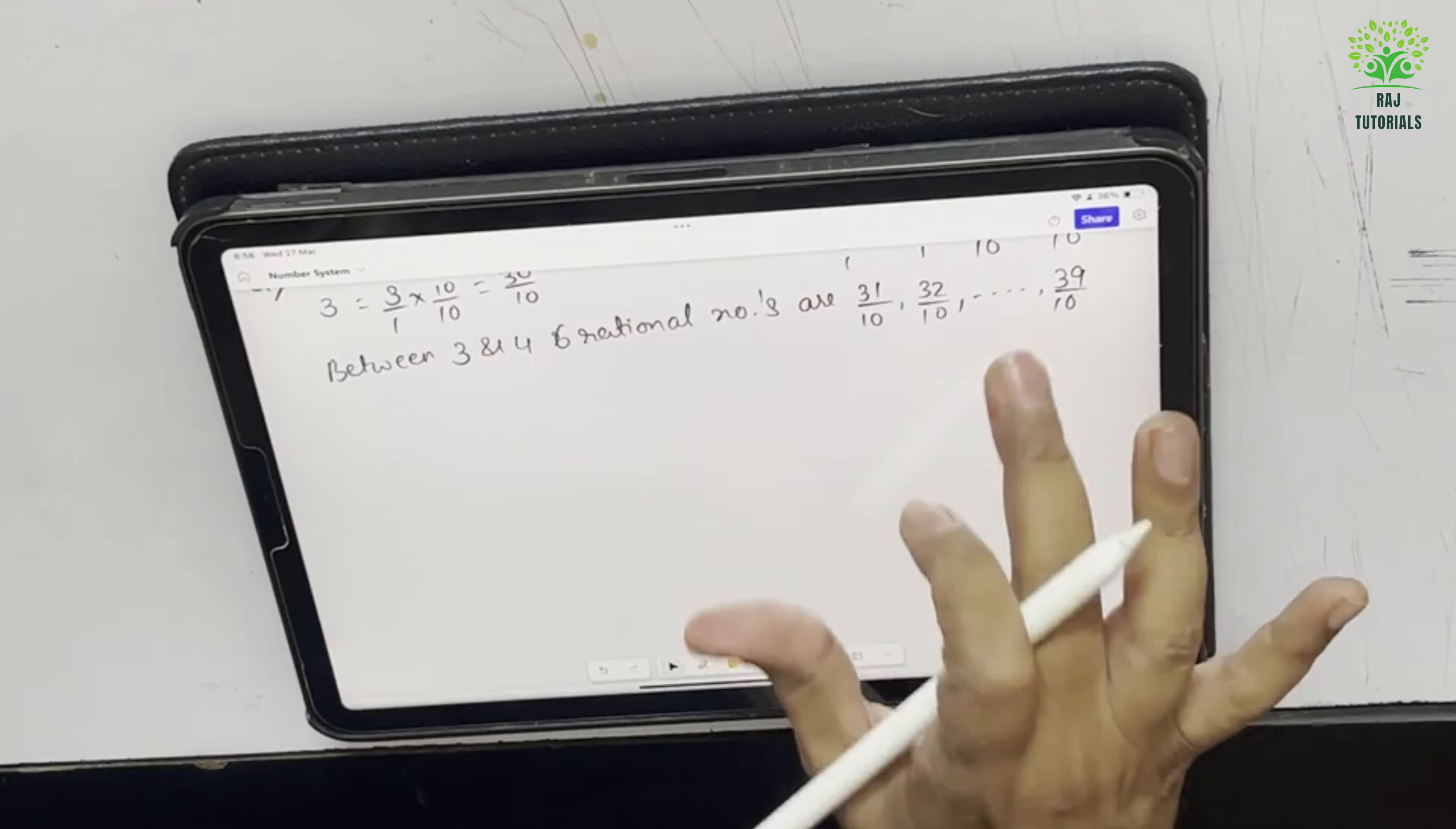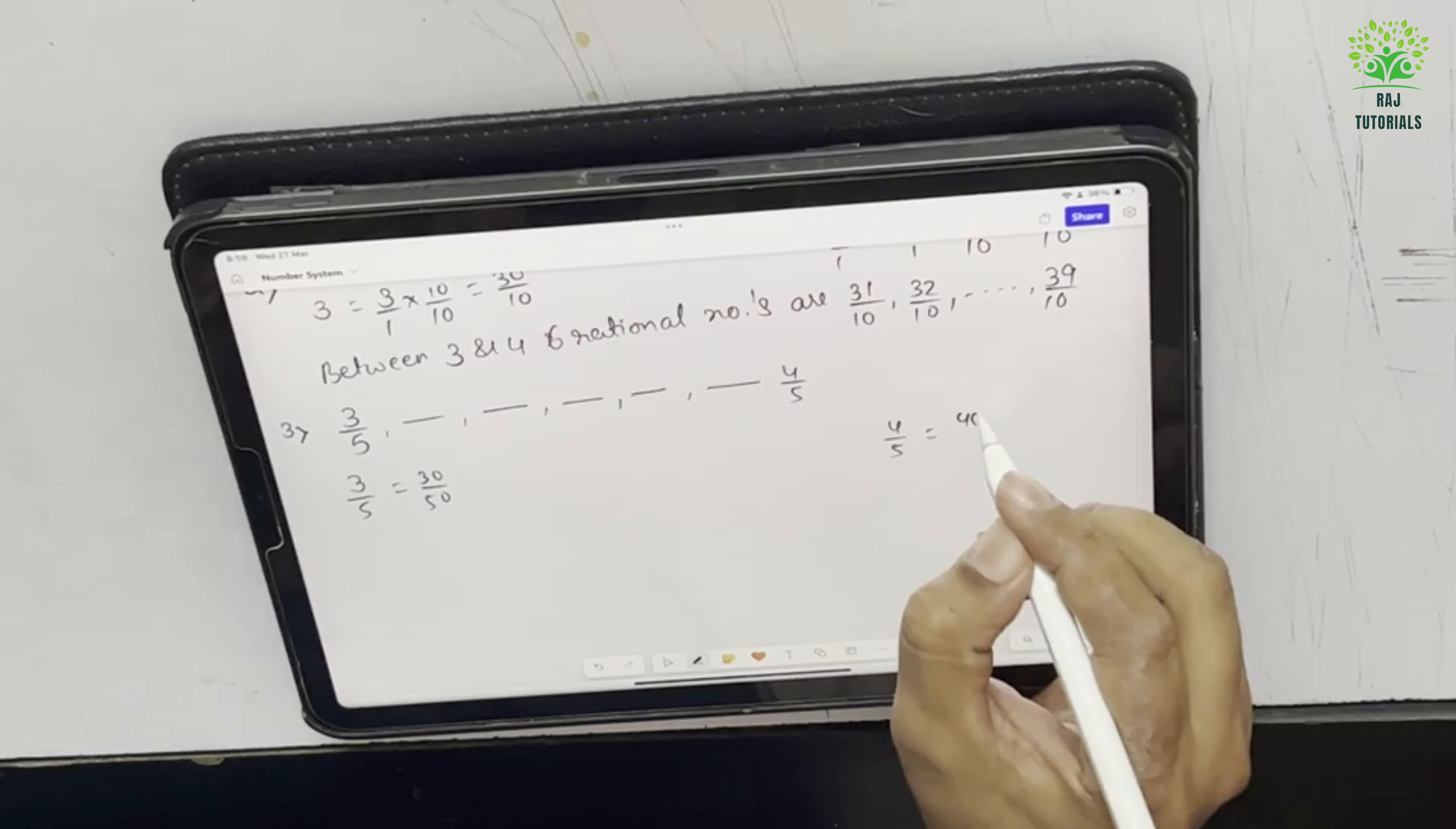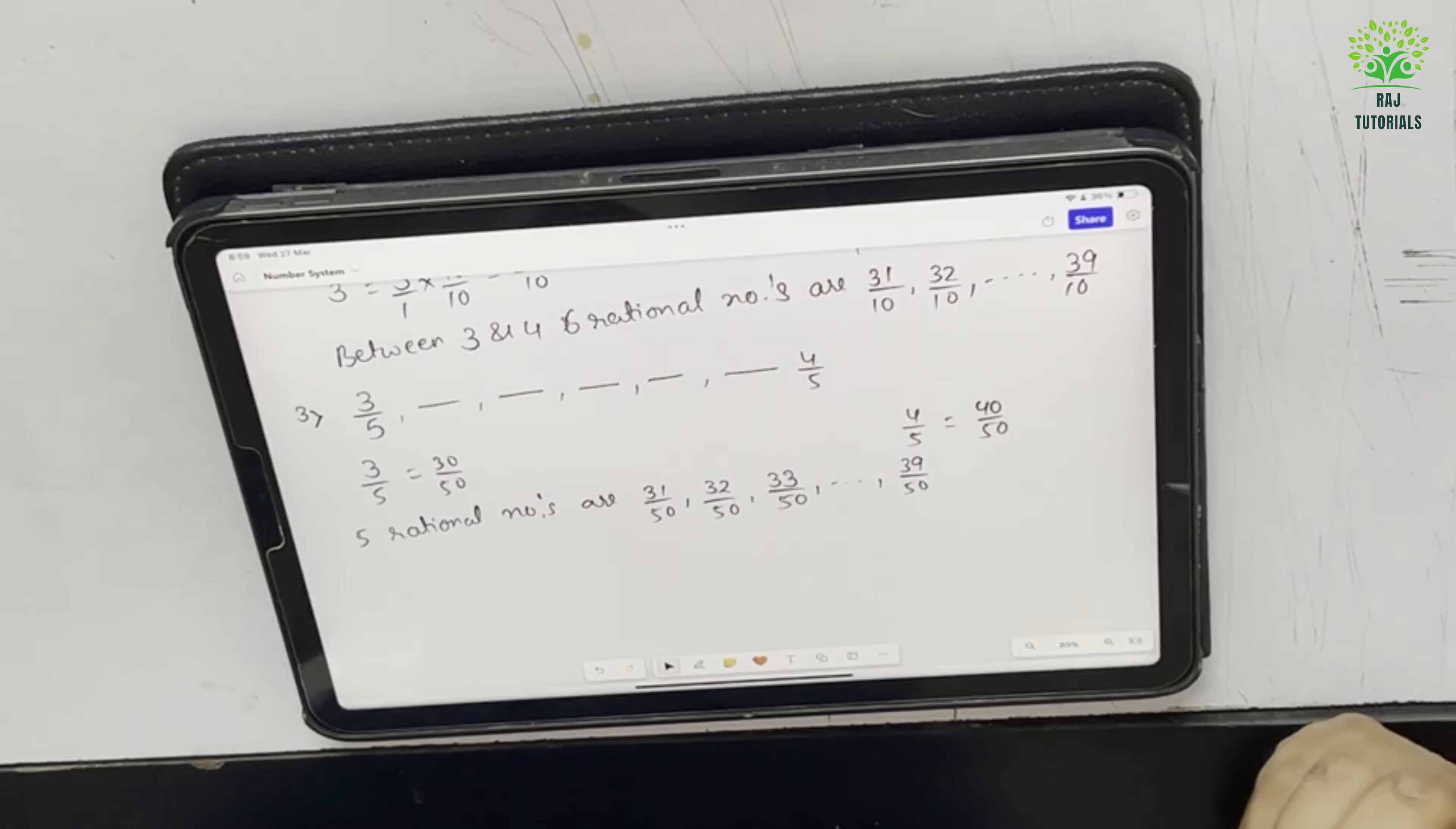Now the third sum says find 5 rational numbers between 3 upon 5 and 4 upon 5. So 5 rational numbers I have to introduce between these two. So can I say 3 upon 5 equal to 30 upon 50 and 4 upon 5 equal to 40 upon 50. So 5 rational numbers are 31 upon 50, 32 upon 50, 33 upon 50. So like that from 39 upon 50 I can take any 5 rational numbers of my choice.